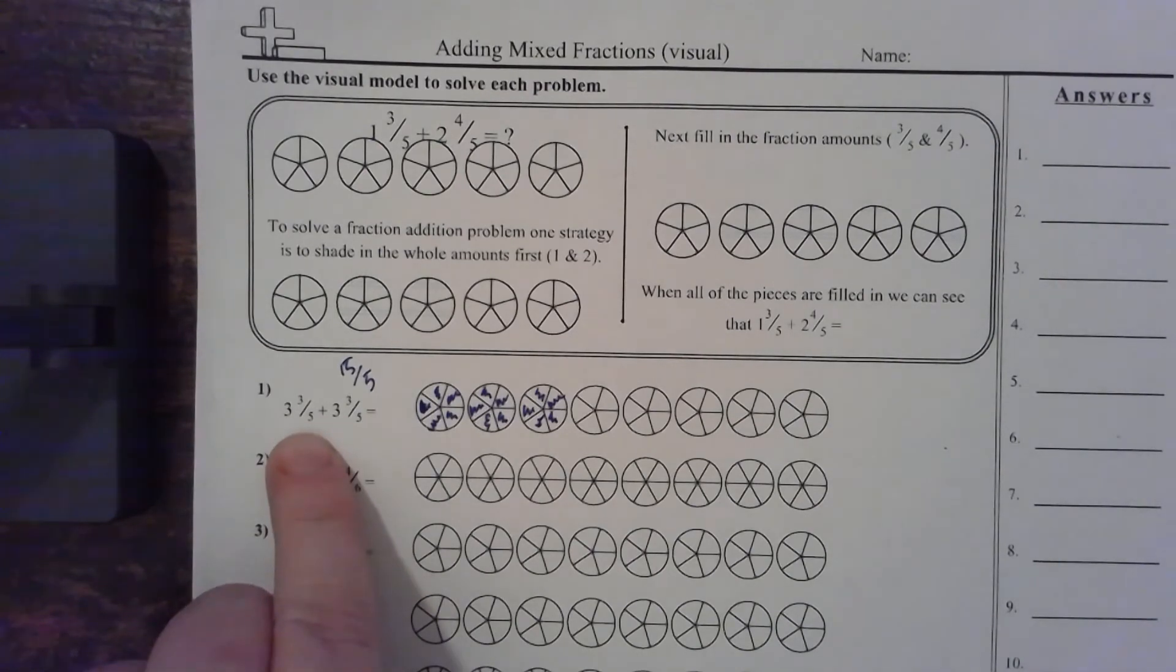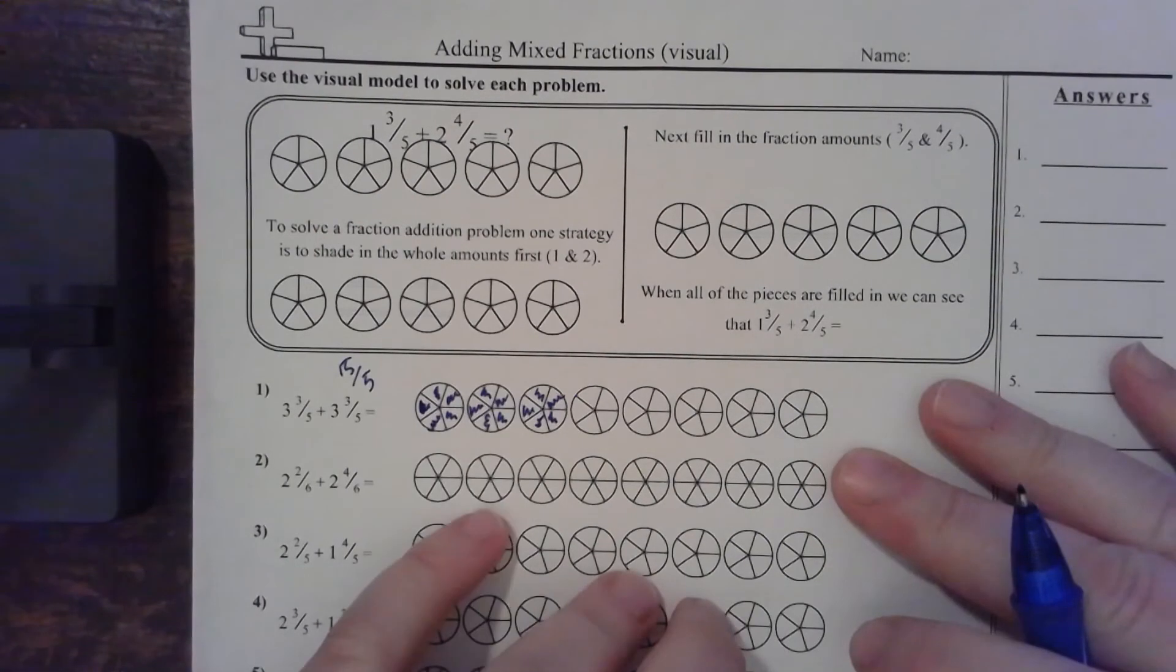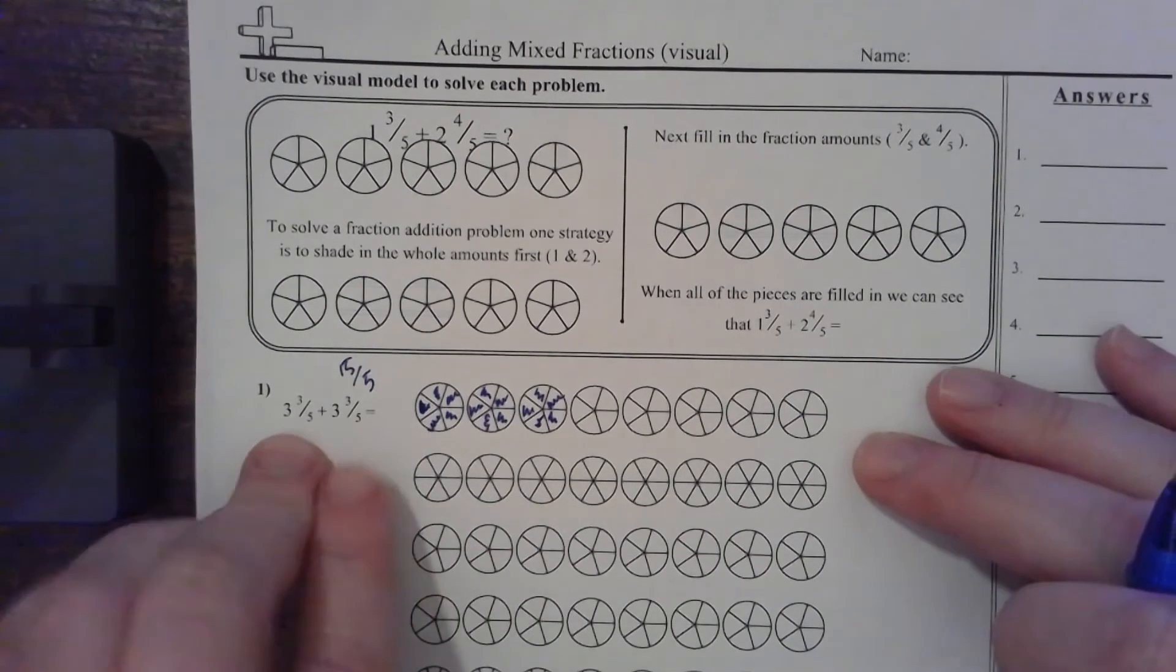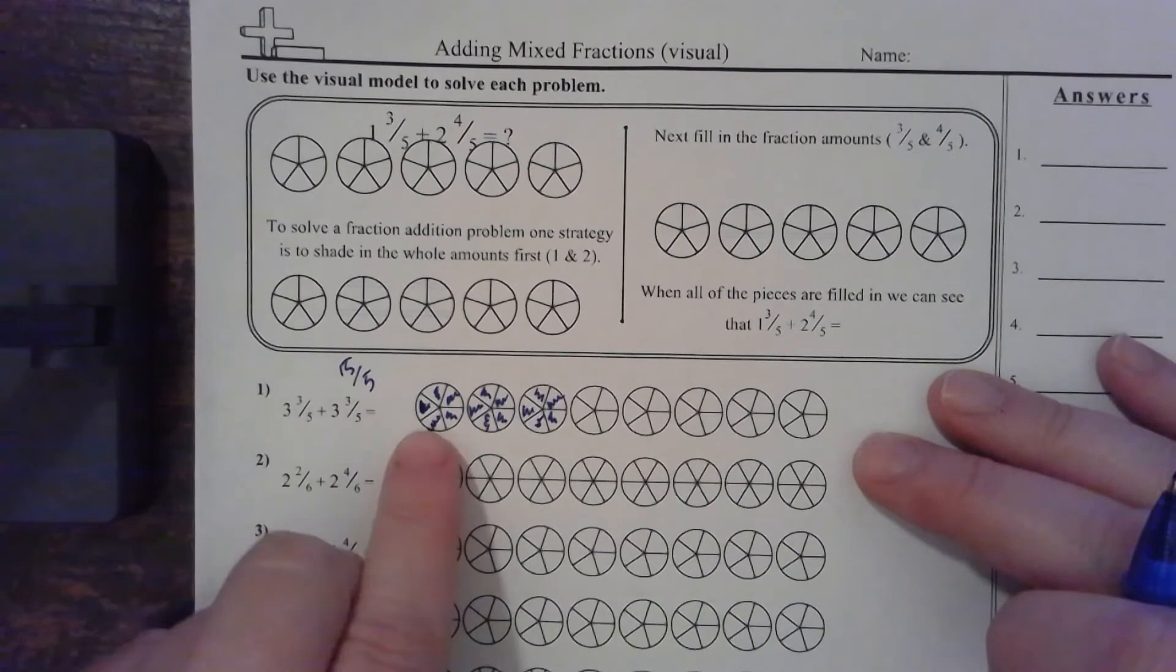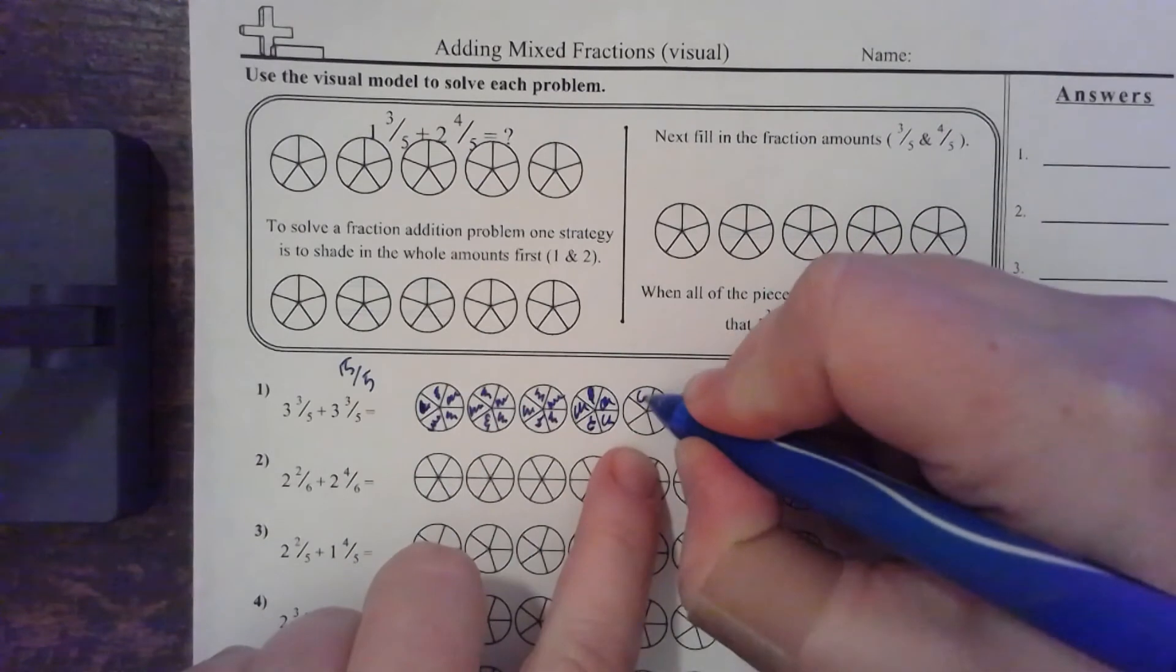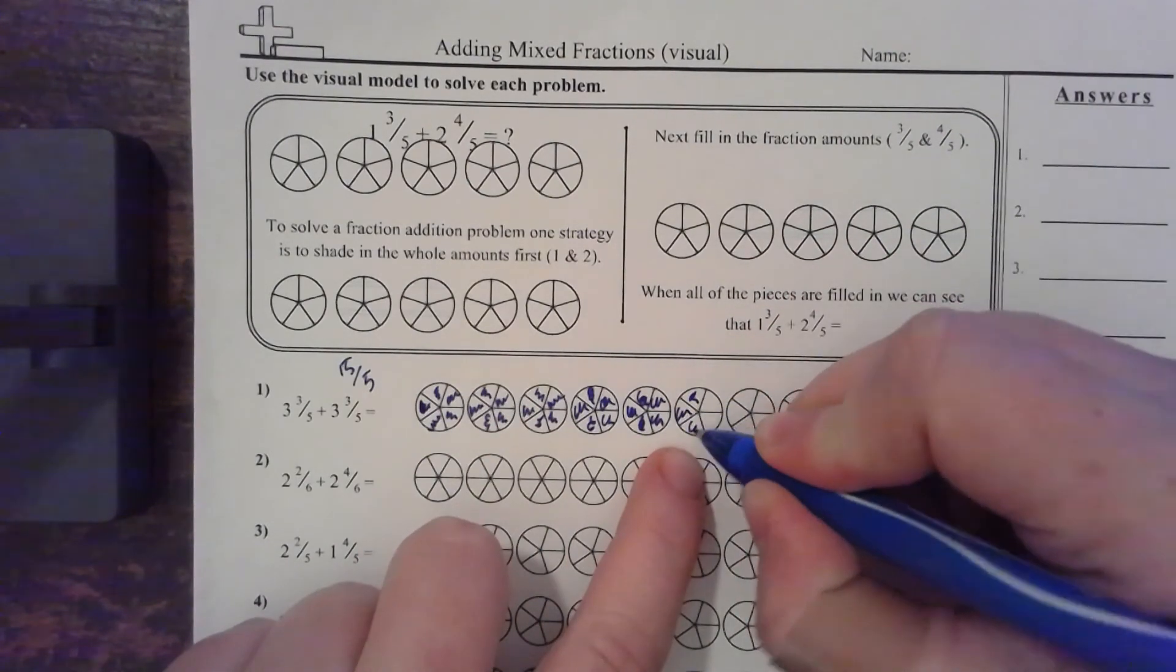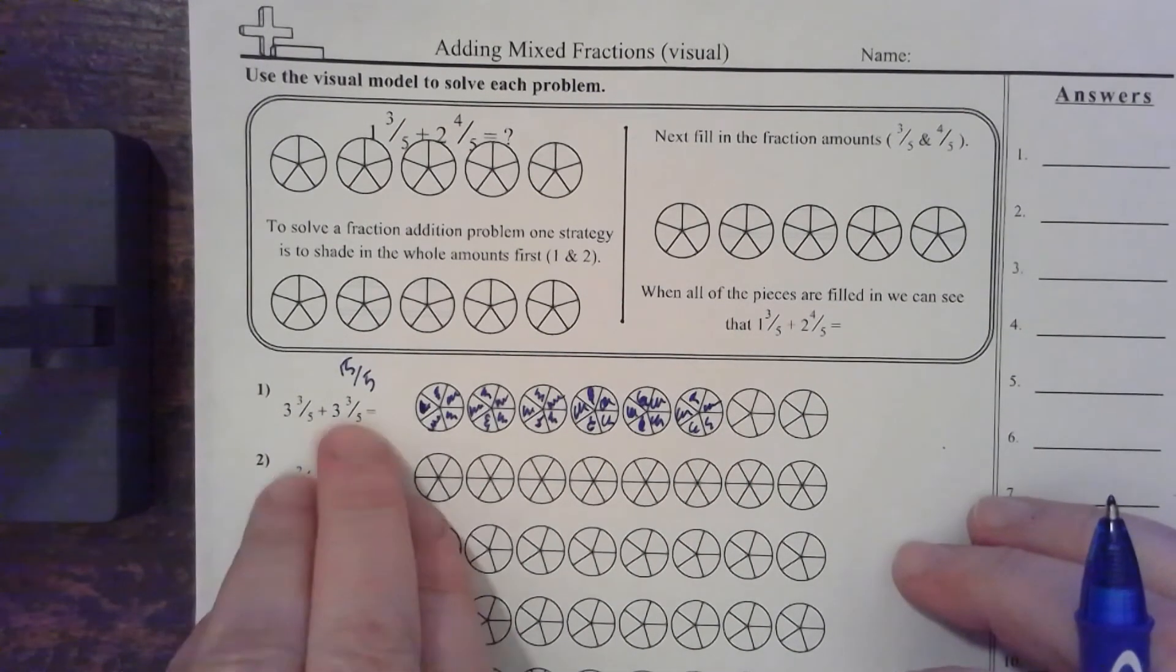All right. Now, this is a picture format. When we do the picture format, it's just real easy for beginners that you can actually see, and this is one way they do it. They say, go ahead and color in all the whole numbers. So three plus three equals six. So that means I've come over here, and I'm going to color in six. One, two, three, four, five, six. I colored in six complete circles because three plus three is six.